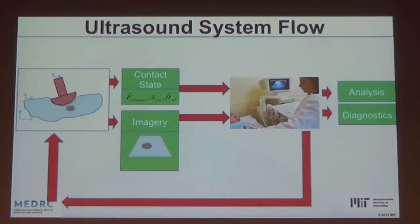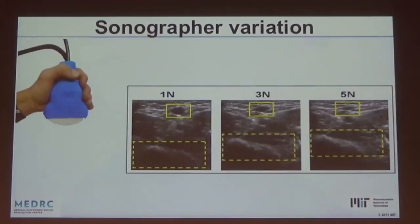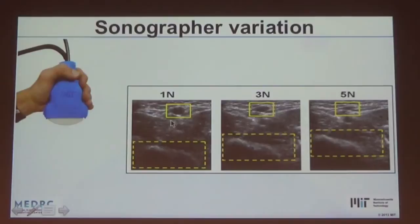Let's talk about sonographer variation. In the upper left corner is an off-the-shelf ultrasound probe — actually a 3D printed version — surrounded by a 3D printed clamshell mounted to the probe through a force system. Looking at the brachial artery, you can clearly see force matters: there's a 1 newton, 3 newton, and 5 newton image showing compression of the artery. People are very bad at knowing how much force they're applying.